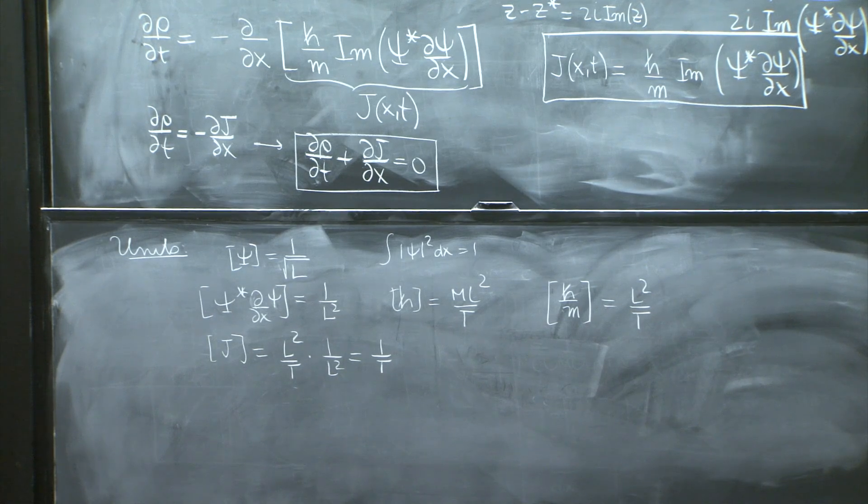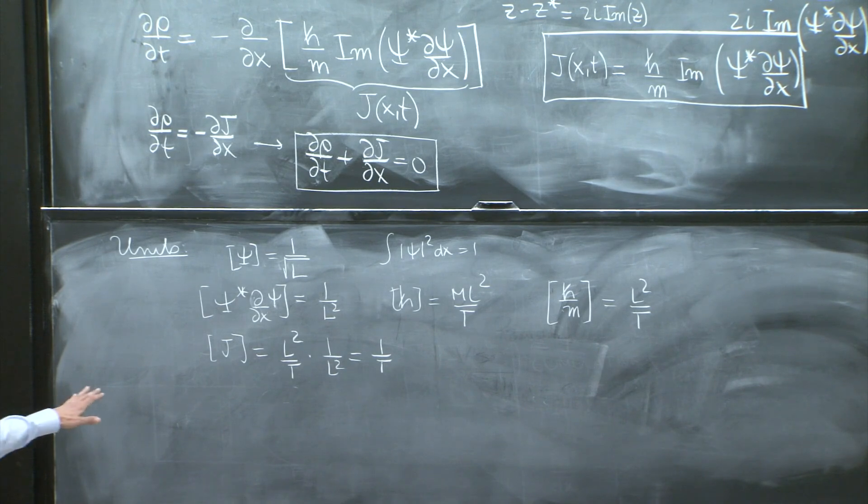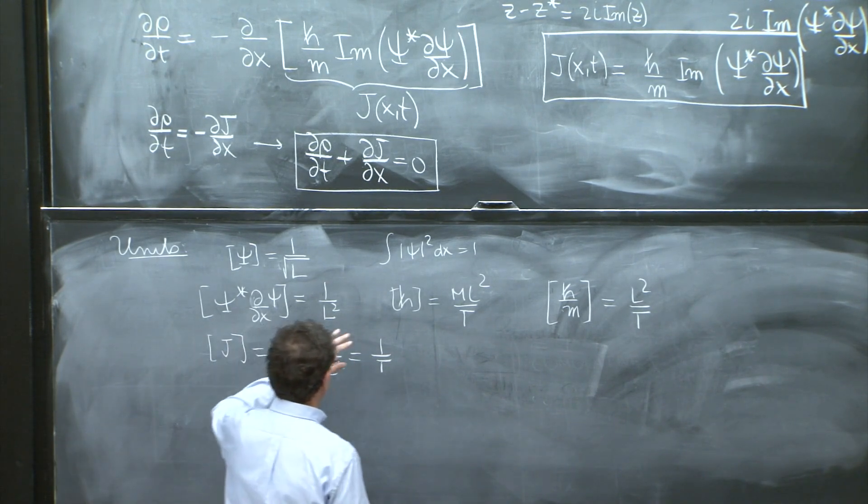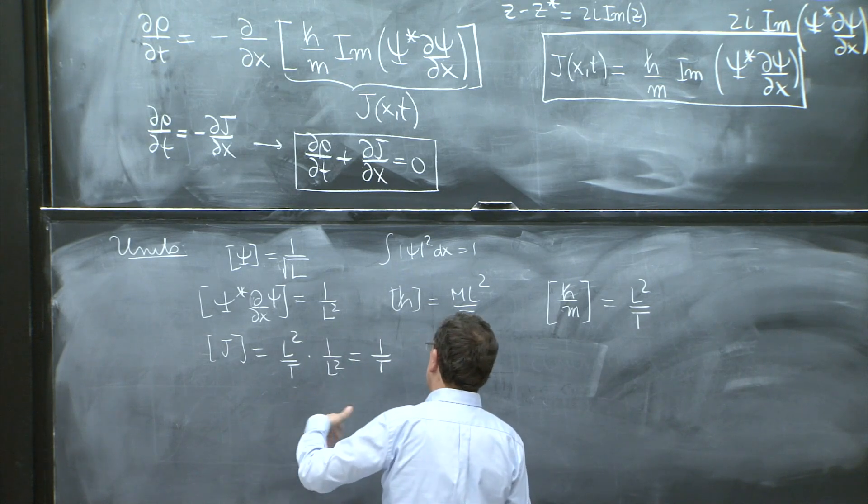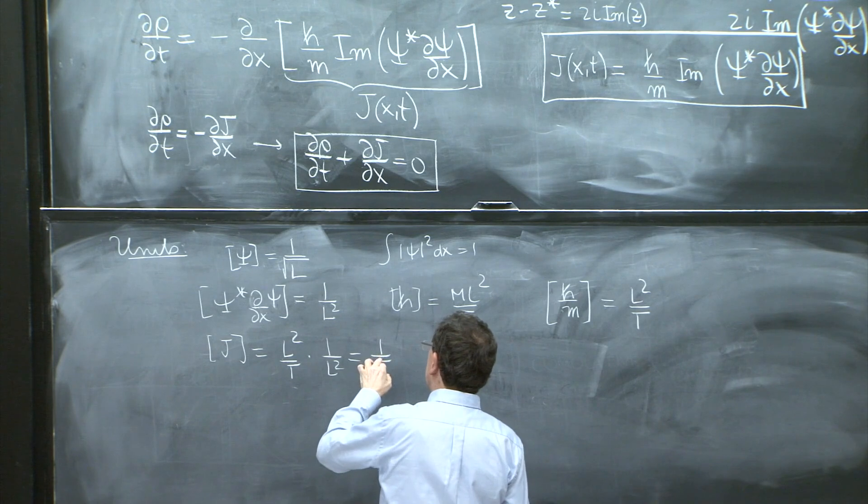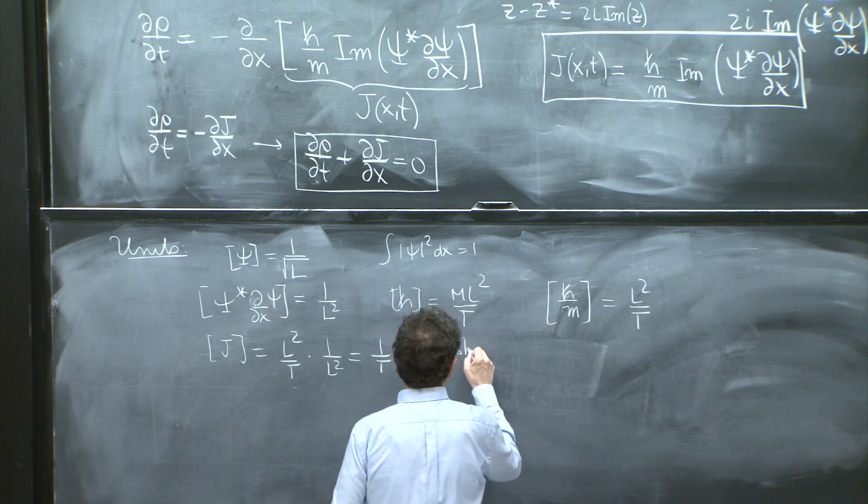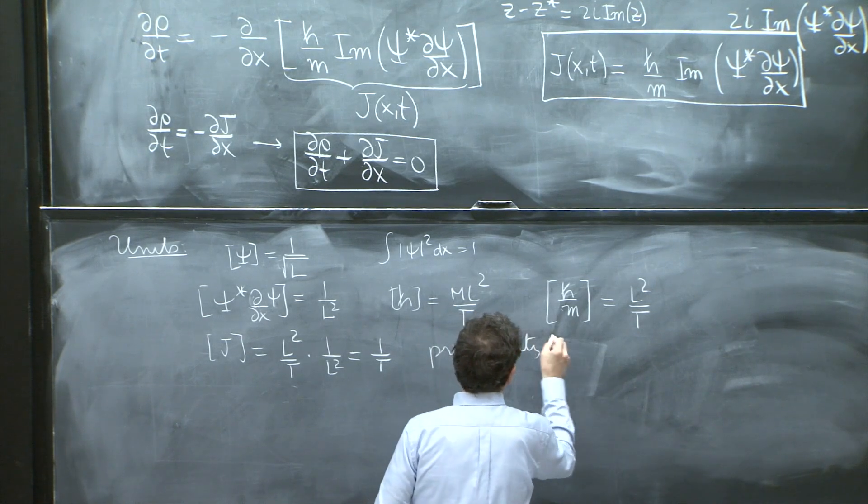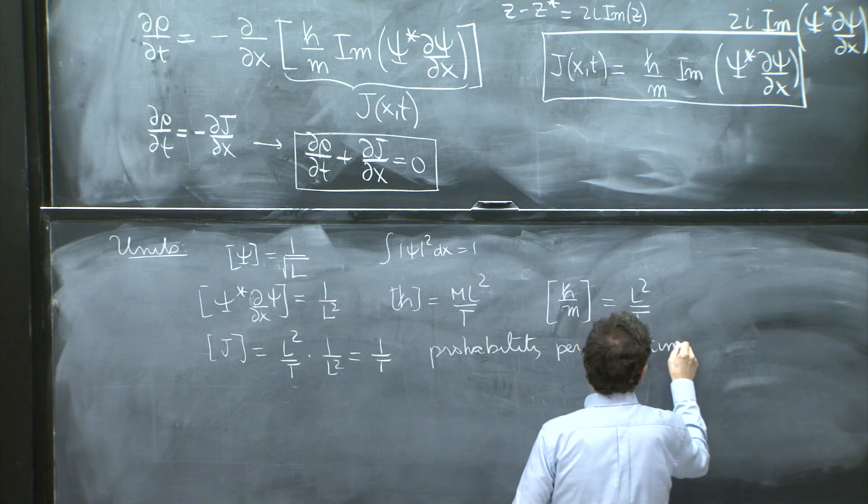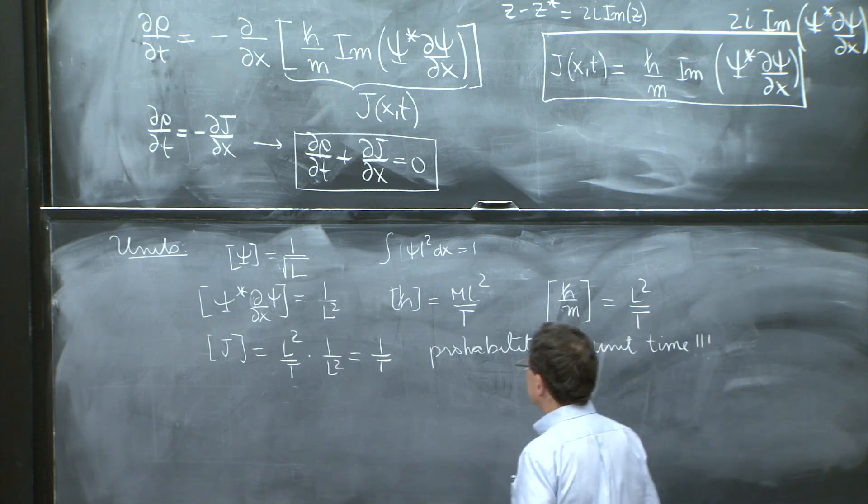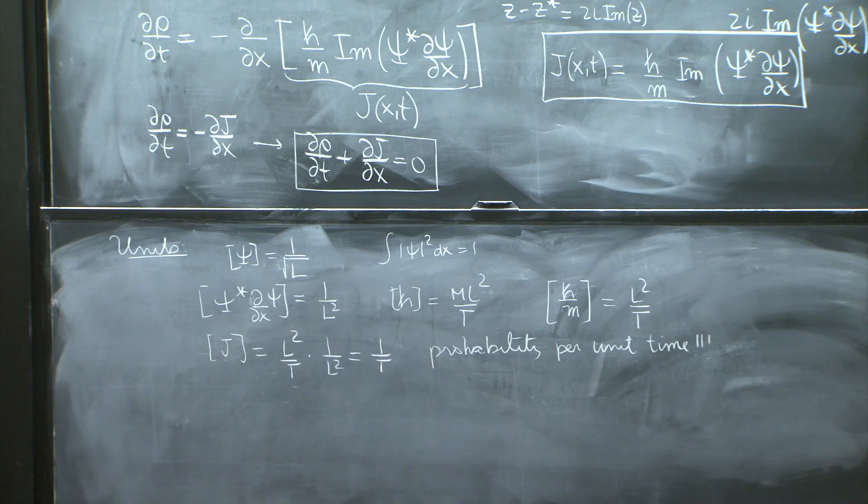And this means just probability per unit time. That's the units of current. Probability has no unit. So we're dealing probability, those are pure numbers. But this is probability per unit time. So probability per unit time. That's the unit of a current.